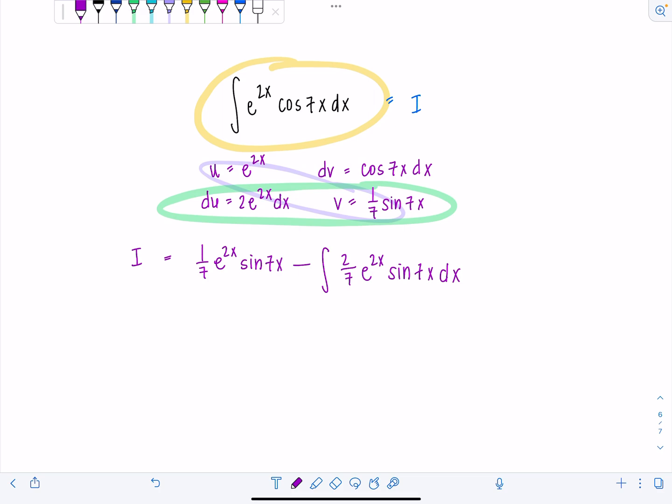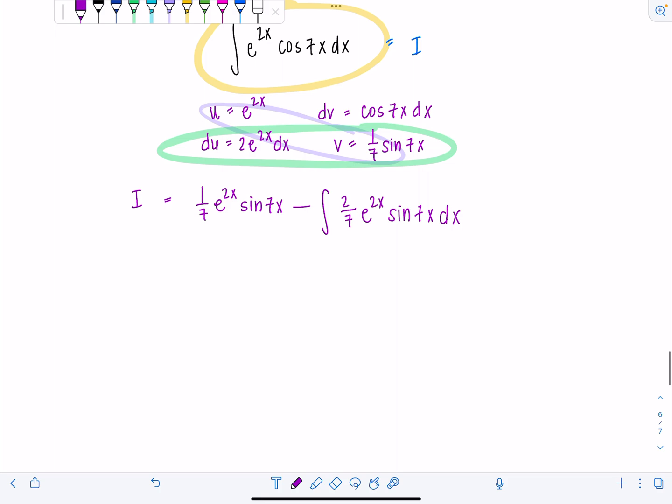We have to apply integration by parts one more time before we're going to get anywhere. And the reason is that e to the 2x, its derivatives are cyclical. It's always e to the 2x times another factor of 2. Cosine 7x, its derivatives also are cyclical. So when we apply multiple iterations of integration by parts, that original integral I will pop back up and we'll solve for it like we do variables in algebra.